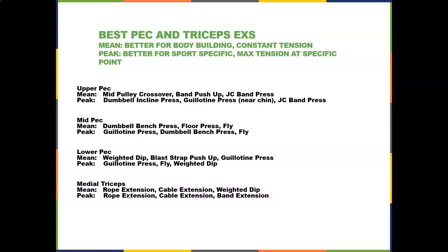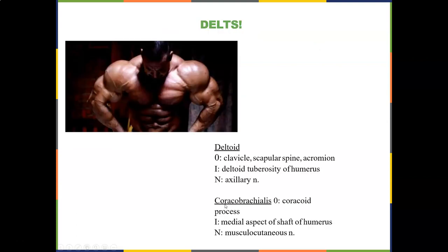For medial triceps, you can do rope extension, cable extension, or diamond push-ups. The deltoid originates on the clavicle, scapular spine, and acromion, and inserts on the deltoid tuberosity of the humerus. Nerve supply is the axillary nerve.